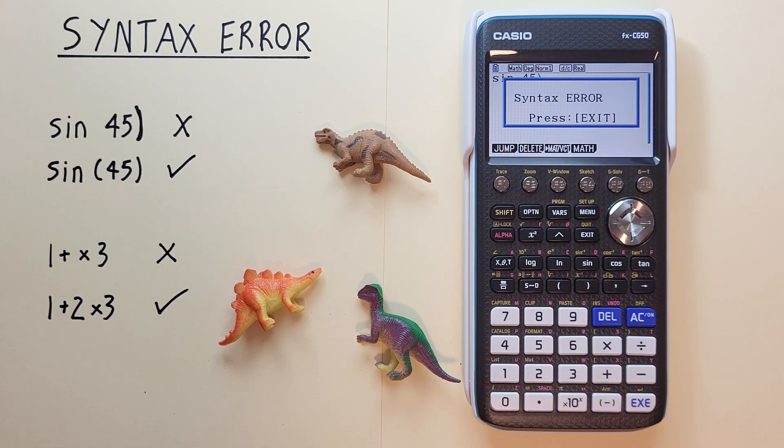That's because our calculator doesn't know how to interpret what we've written here because we've only included half the brackets required.